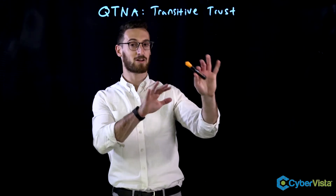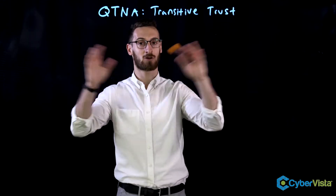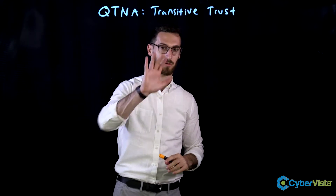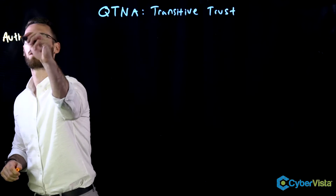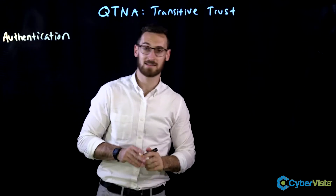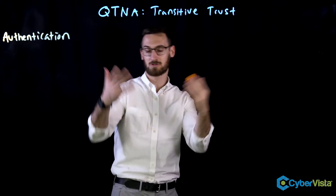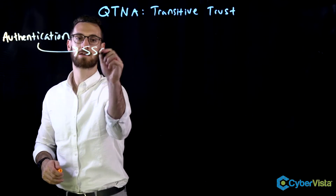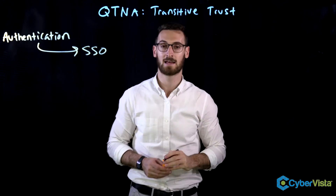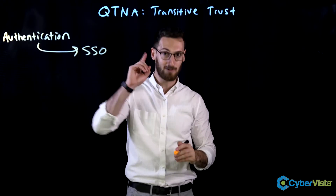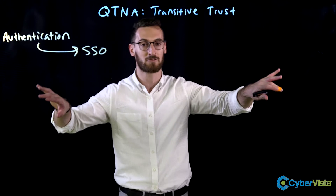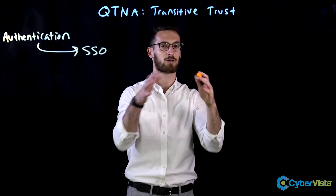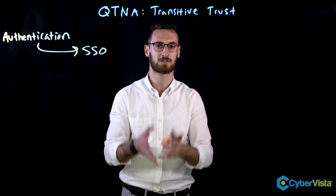Before we talk about transitive trust itself, it's a good idea to understand the overall context and kind of wherever it hangs out. So I'm going to write a word on the board that you all know. Authentication is simply when you're proving that you are who you say you are. And there's a form of authentication called single sign-on. You've probably heard of Kerberos, which is typically for our internal LAN, on our internal network.